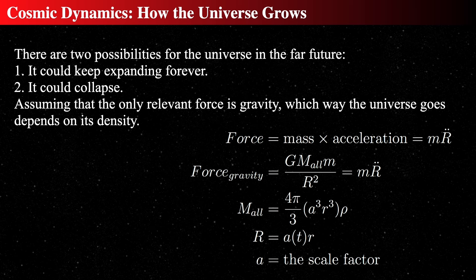The ball itself is the universe — a toy universe — and the little mass m is the ant on the surface of the universe. All the mass underneath the ant pulls on it as though it were at the center. The big R̈ is the acceleration or deceleration of the radius of the ball on which the ant is standing. So: universe as ball, ant on surface — how fast is the ball expanding? Is it accelerating, decelerating, or staying constant?